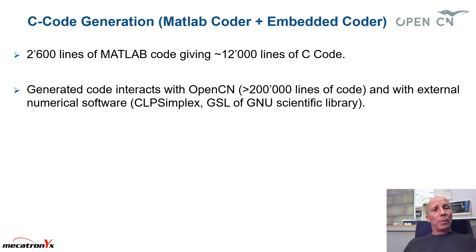A couple of words about the C code generation. So we utilize the MATLAB for coding. We had about 2,600 lines of MATLAB code giving about 12,000 lines of C code. These 12,000 lines of C code interact with the framework is in my framework and with external scientific libraries. For example, the simplex for solving the linear program.